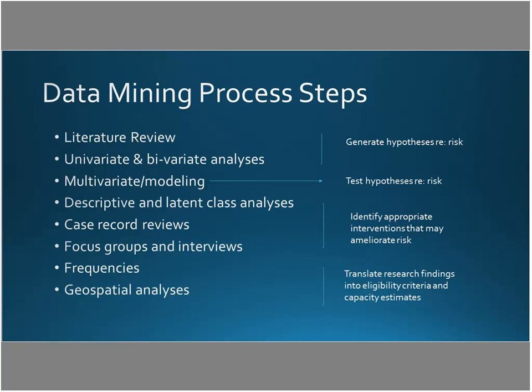Once we did all of that, we went back to the administrative data to understand: we've selected our interventions, now how many therapists do we need and where should we put them? How many kids are likely to come through and meet the eligibility criteria? How do we translate the research findings about risk into eligibility criteria that you could apply to an individual case and say, yes, you should be in this intervention — you are at risk? And how do we make accurate estimates about the capacity we need?